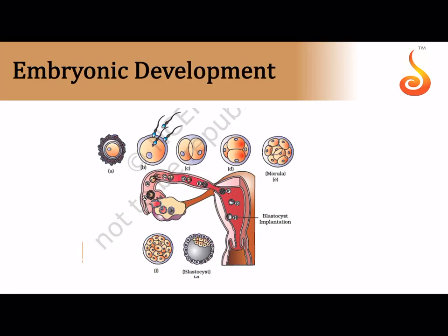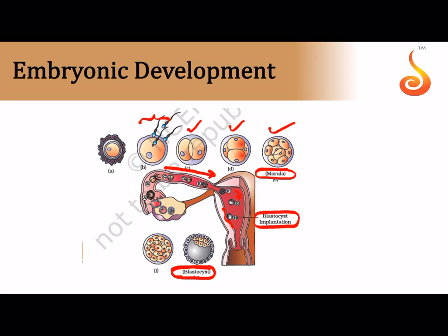Once fertilization happens, the embryo passes through the fallopian tube and reaches the uterus undergoing repeated mitotic divisions called cleavage. The cells obtained by cleavage are called blastomeres. An embryo with about 8 to 16 blastomeres is called the morula. The morula develops into a hollow embryo called the blastocyst, which has more than 32 blastomeres. The blastocyst attaches to the inner wall of the uterus — the endometrium — and this process, occurring around the seventh day after fertilization, is called implantation.